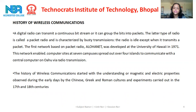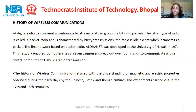The network enabled computer sites at seven campuses spread out over four islands to communicate with a central computer via radio transmission. The history of wireless communication started with the understanding of magnetic and electric properties observed during the early days by the Chinese, Greek and Roman cultures and experiments carried out in the 17th and 18th centuries.